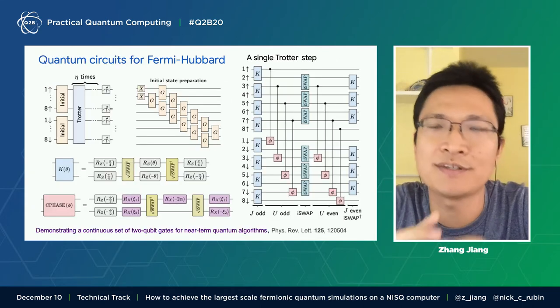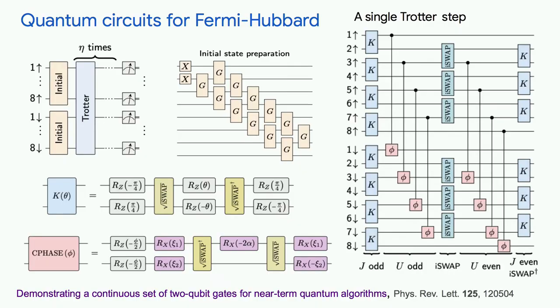Nick just talked about the initialization circuit for the Hartree-Fock. In the same case here, we have the same circuit initialization for the spin-up and the spin-down states. And then we apply the circuit for time evolution. In the time evolution circuit, we have both the K gate and the control phase gate to simulate the term J and the term U separately.